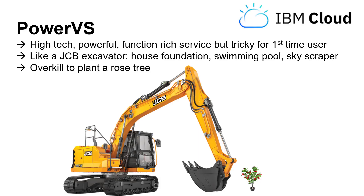So we want to use PowerVS, which is part of the IBM cloud - lots of high technology, powerful, function-rich service. But that's a bit tricky for the first-time user who wants to do something simple and quickly. It's a bit like a JCB excavator - a fantastic piece of machinery. You can dig out the foundations of your house, put in a swimming pool, start off a skyscraper. But if you just want to plant one little rose tree, it's probably a bit of overkill. What you want is somebody to sit in the cabin with you and say: don't touch all those buttons - just do forward, backward, left, right, up and down. And that will get you the hole and your first success with this new technology.